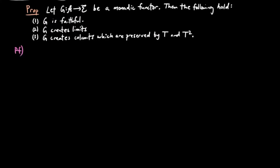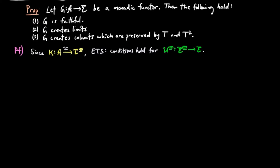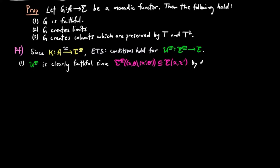For the proof, since the comparison functor K is an equivalence by definition of G being a monadic functor, it is enough to show that the above conditions hold for the forgetful functor for the Eilenberg-Moore category. For (1), UT is clearly faithful, since the morphisms in the Eilenberg-Moore category are defined as a subcollection of morphisms in E.